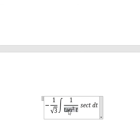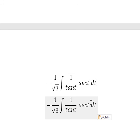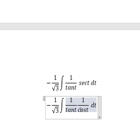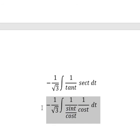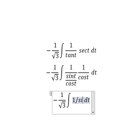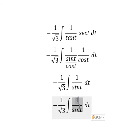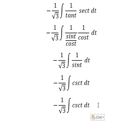We simplify. Secant of t we change for 1 over cos(t). Tan(t) we change for sin(t) over cos(t). cos(t) multiplied by sin(t) over cos(t). So now we just have 1 over sin(t), and this we change for cosecant of t.